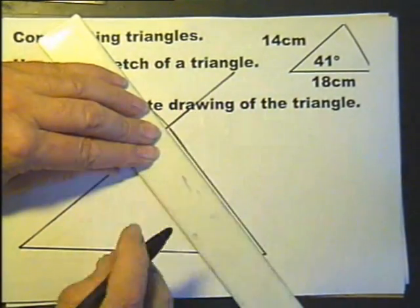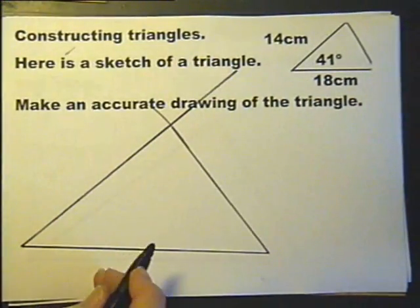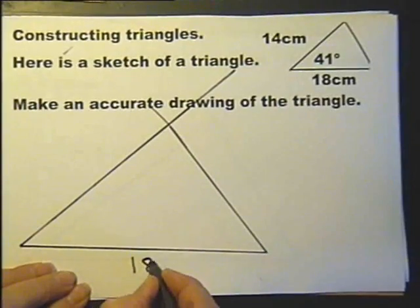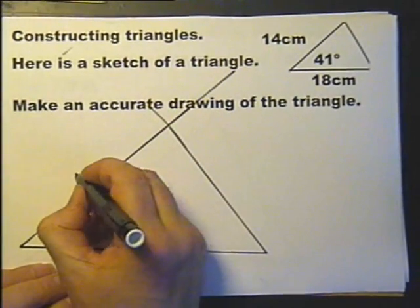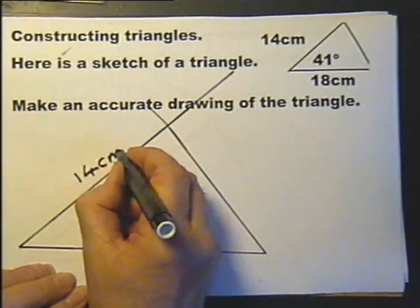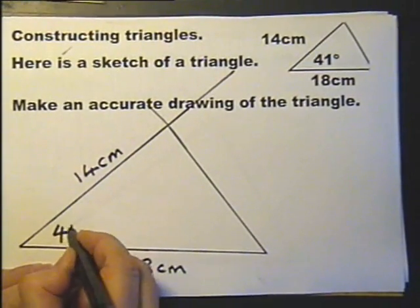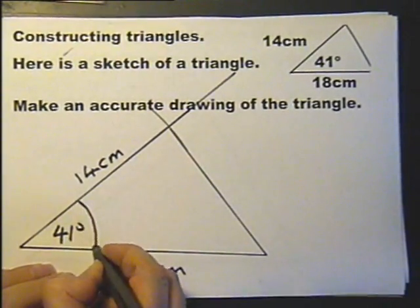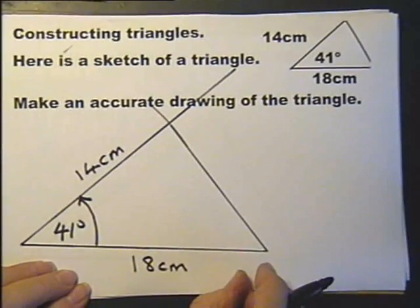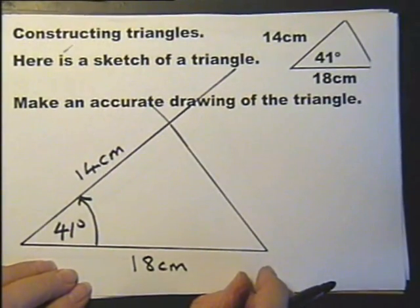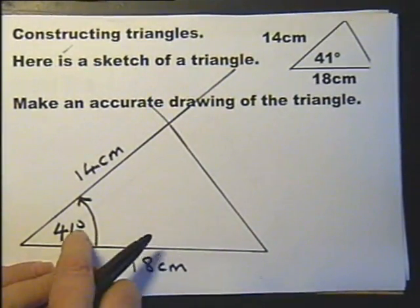Now what I didn't do on the previous triangle, I suppose I should have done, is label it. So I'll mention that now and say, oh dear, I should have mentioned it before and labeled the other one. But there you go, constructing a triangle given two sides and an included angle. That's called the included angle.